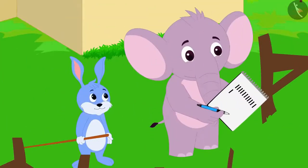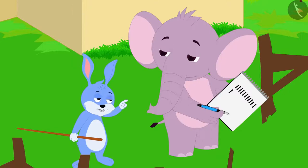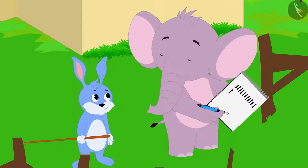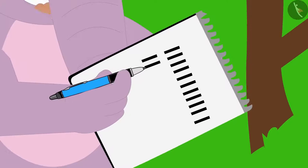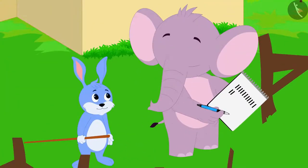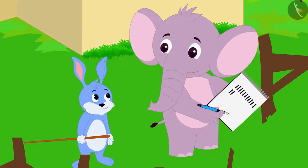Bunny asked Appu, 'Appu, what are you doing?' Appu replied, 'I am counting my sheep. As soon as I count a sheep, I draw a line. But Bunny, it is taking me a long time to do that.'